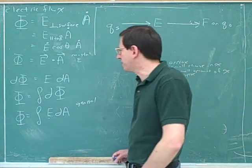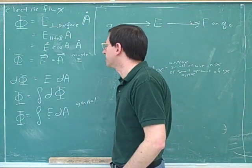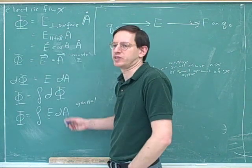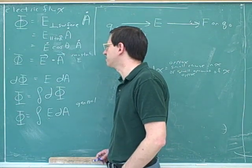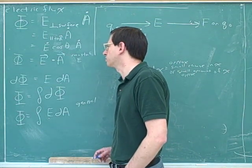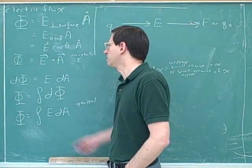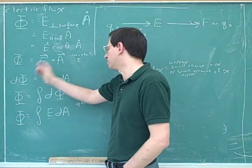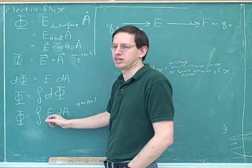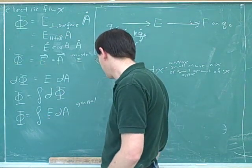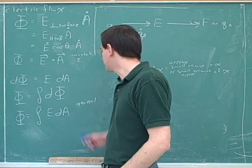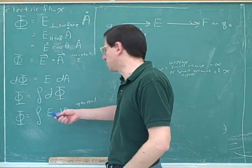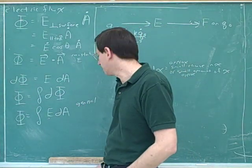I spent some time trying to explain the logic here because you're going to actually need this for a bunch of other concepts as the course goes on. You'll have a bunch of formulas that will only work when one of the variables is constant, and you need to generalize them using integration. So this is the formula that you use in general for flux when E can be changing.